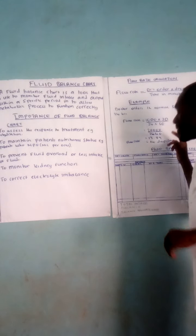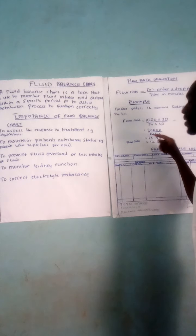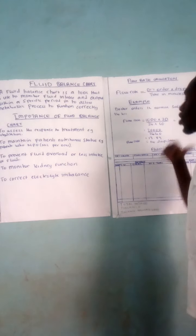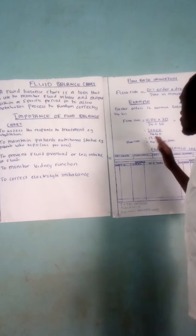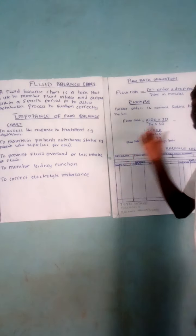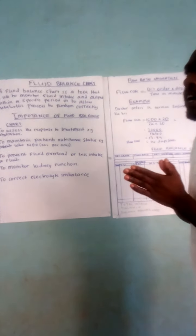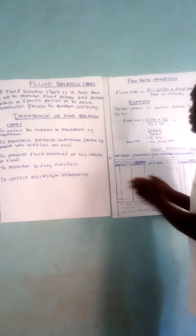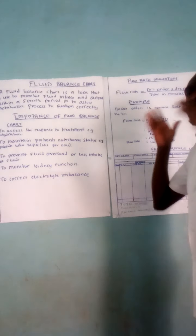So 1,000 times 20 gives us 20,000; and 24 times 60 gives us 1,440. So 20,000 divided by 1,440 gives us 13.88. It is difficult to give fluids at a drop rate of 13.88, so we round it off. The flow rate will be 14 drops per minute.